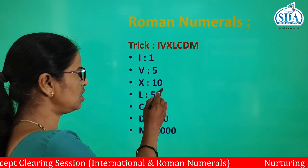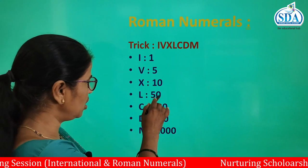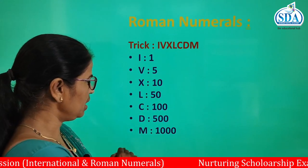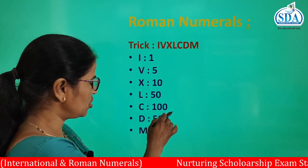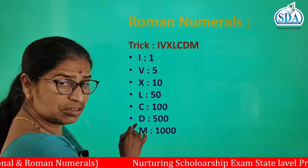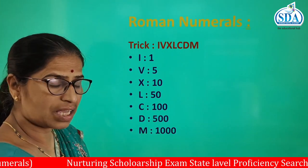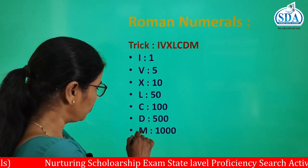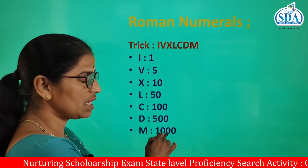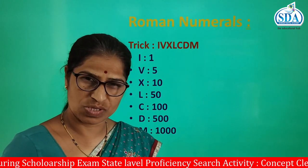Symbol V indicates number 5. X is related to 10. L is related to 50. C is related to 100. D indicates number 500. And M indicates number 1000.